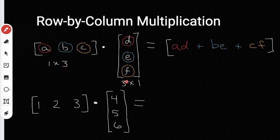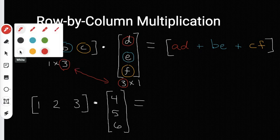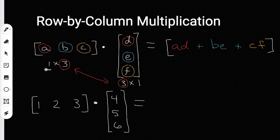By dimensions matching up, I mean you want the inside numbers to match up. Notice this is a 1 by 3 and this is a 3 by 1 — I'm going to circle the inside numbers. Those should always match up, and once they match up the result of your problem is going to have the dimensions of the outside numbers. I've got a 1 on the outside and a 1 on the outside, so this matrix is going to be a 1 by 1.